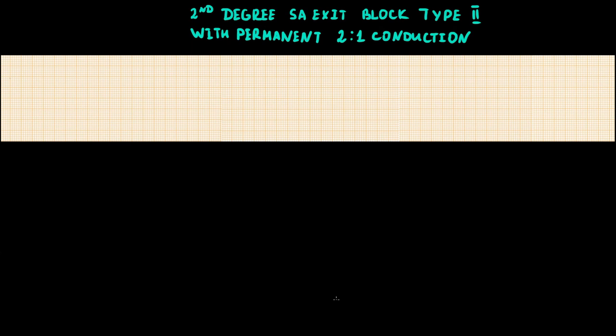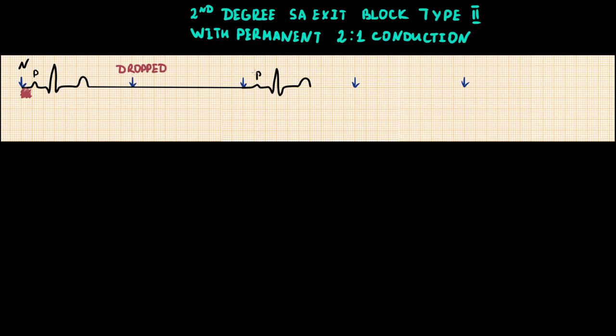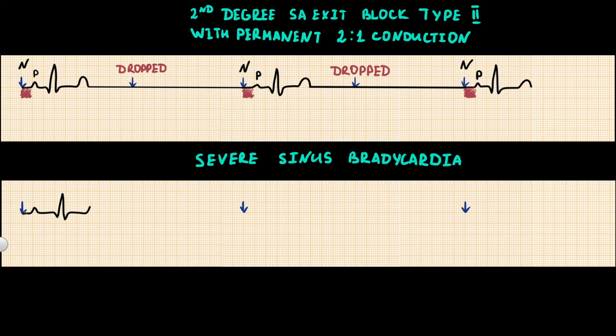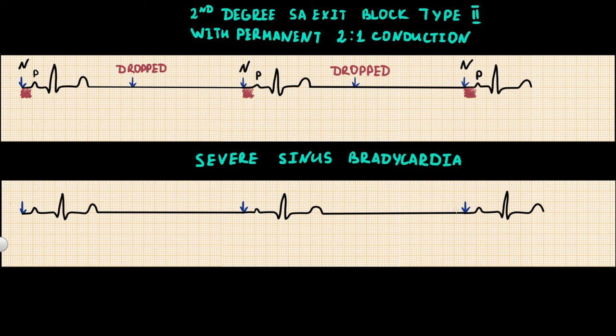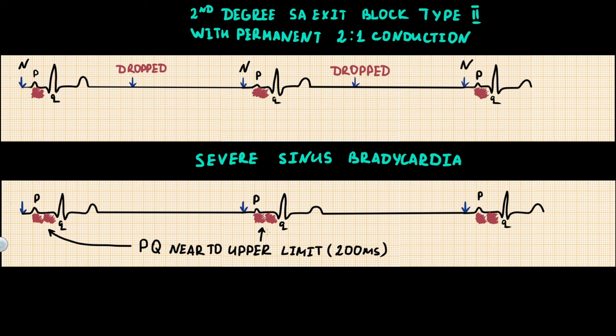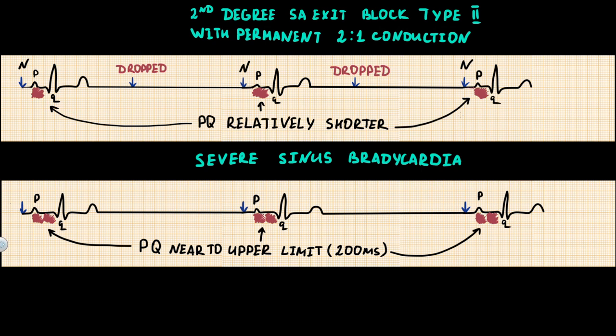It is important to note that permanent second degree sinoatrial exit block type 2 with conduction 2 to 1 can imitate severe sinus bradycardia. On the top ECG scheme we see second degree SA block with conduction 2 to 1, where every second impulse is blocked. In the lower ECG we see severe sinus bradycardia. The key difference lies in the PQ intervals: in severe sinus bradycardia the PQ interval is near the upper limit, whereas in permanent sinoatrial block with conduction 2 to 1 the PQ interval is relatively shorter.